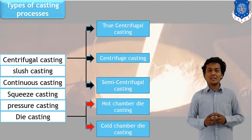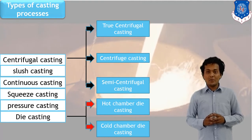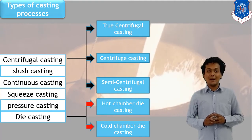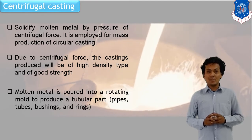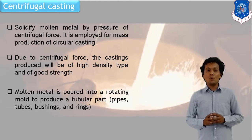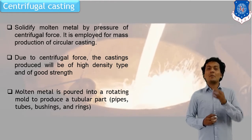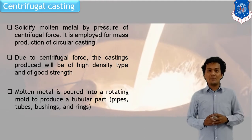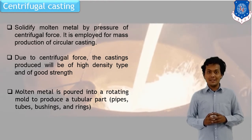The first process is centrifugal casting. In centrifugal casting, there are three subcategories: semi-centrifugal, true centrifugal, and centrifuge casting. In die casting, there are two parts: hot chamber die casting and cold chamber die casting. In centrifugal casting, as per the name, the centrifugal force concept is used — with continuous revolution, metal is forced in the outward direction.